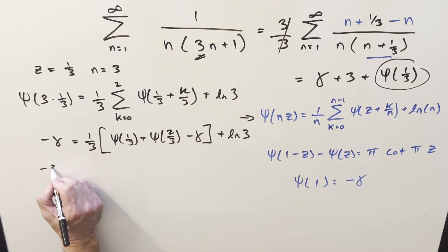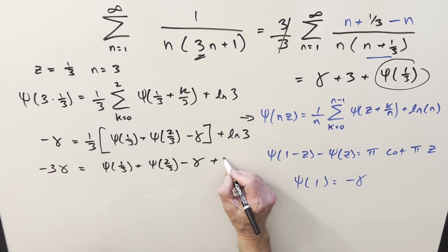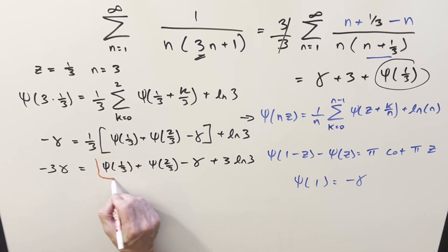Multiply by 3 on both sides, and we have minus 3 times the constant. It's going to cancel with this here. And then we still have to multiply in a 3 on this ln 3 here. Then we basically, in this equation, we have two things we don't know. We don't know digamma of 1 third and digamma of 2 third.